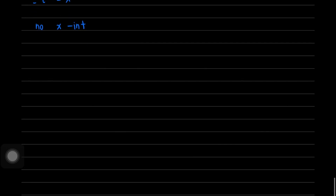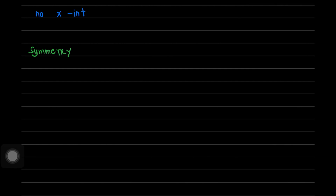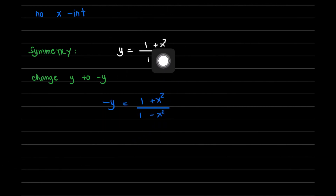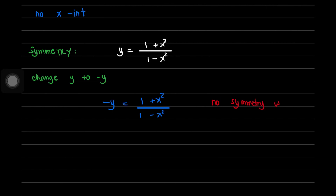The next step is to test for symmetry. To check symmetry with respect to the x-axis, we change y to negative y, giving us negative y = (1 + x²)/(1 - x²). Comparing this to the original equation, there is a change in value, so there is no symmetry with respect to the x-axis.